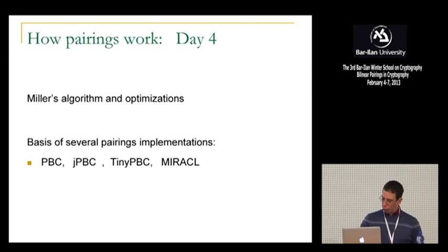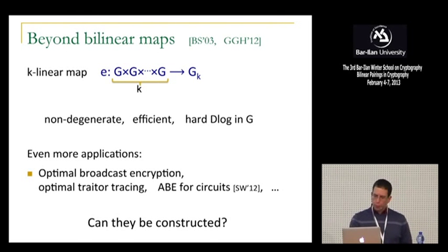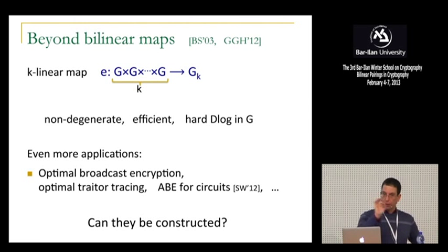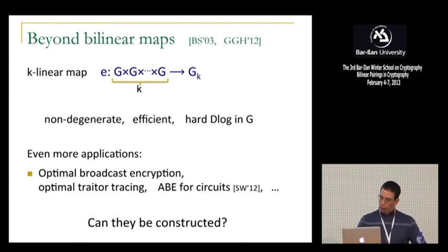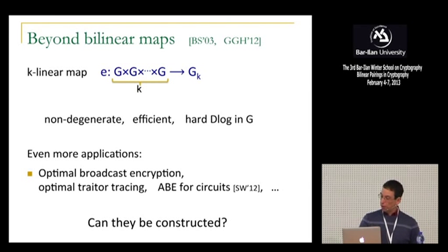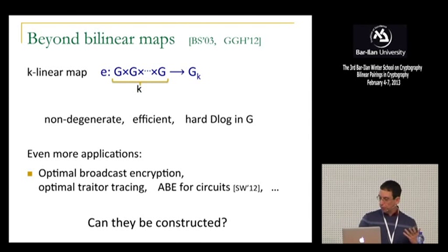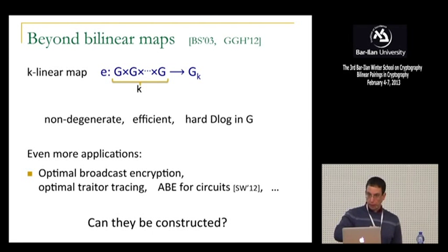We'll see many, many applications of pairings to crypto. But it turns out we can even do more. Back in 2003, I wrote a paper with Alice Silverberg saying, hey, it's kind of cool that we can do all these things with pairings, but in fact, if we had more than a pairing — something called a k-linear map, not just a bilinear map, but a map that operates on k-tuples rather than just pairs, mapping k copies of the group G into some other group G_k, with the same properties: non-degenerate, efficient, hard discrete log problem — then all of a sudden lots of problems that today we don't know how to solve with pairings become easy. We can do group key exchange, optimal broadcast encryption, attribute-based encryption for circuits.